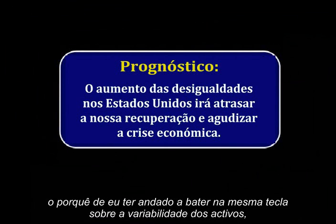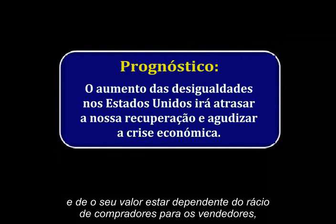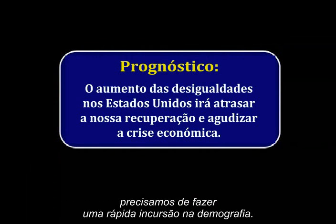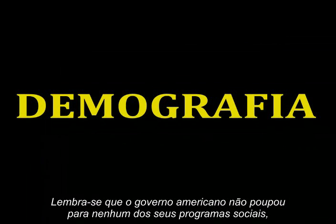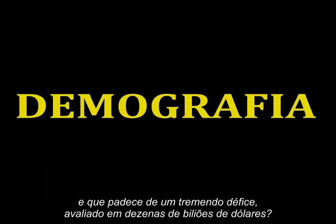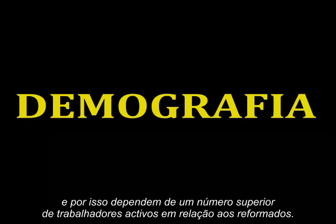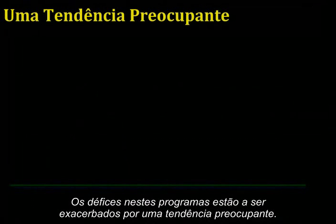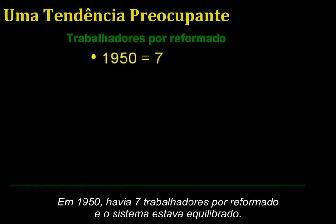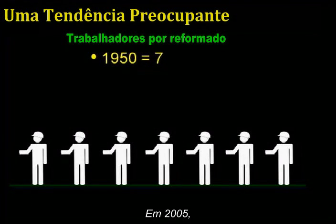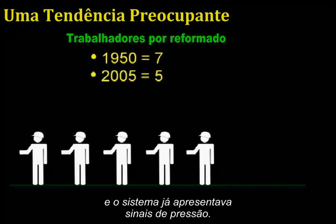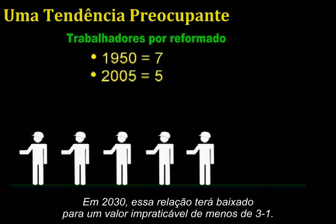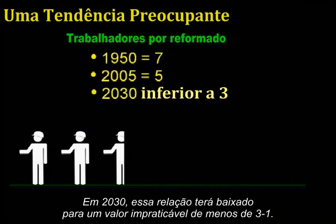In order to really understand why assets being variable and their value being dependent on the ratio of buyers to sellers matters, we'll need to take a quick trip into demographics. The U.S. government has not saved in any of its entitlement programs and has a massive shortfall measuring in the tens of trillions of dollars. These programs are really wealth transfer programs, not savings accounts, and depend on a significant surplus of current workers to retirees. In 1950, there were seven workers per retiree and the system was balanced; by 2005 that ratio had dropped to only 5 to 1; and by 2030, it will have plummeted to less than 3 to 1.